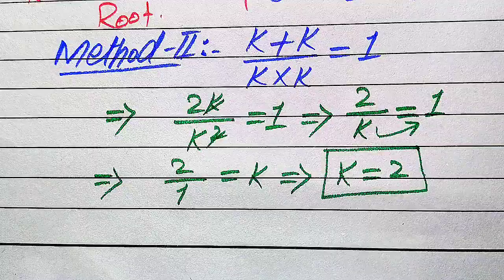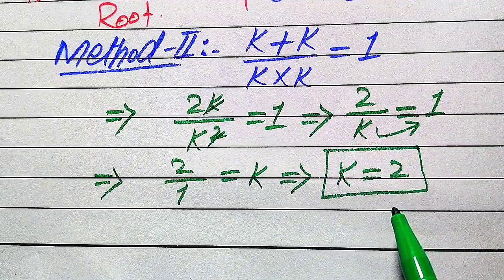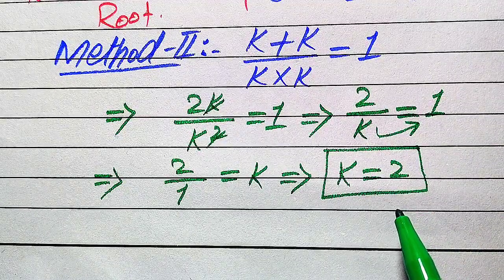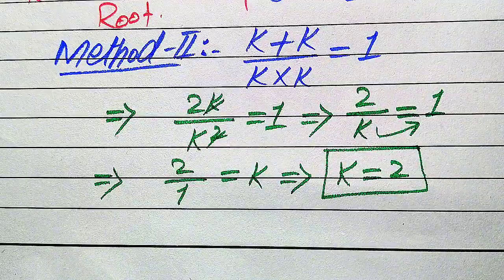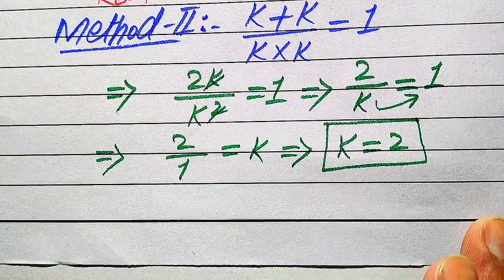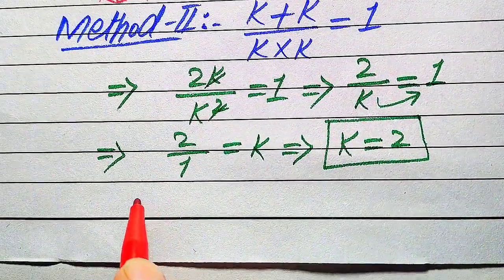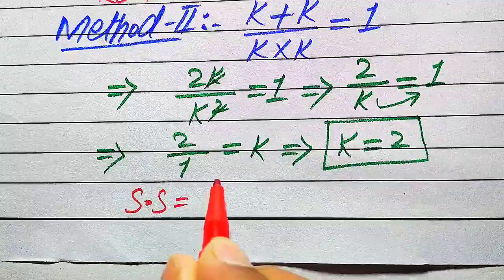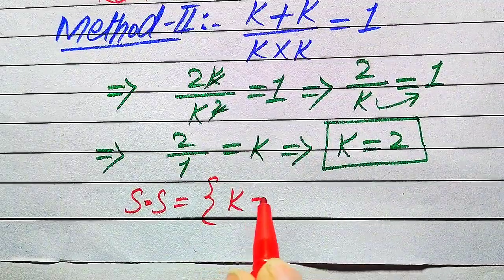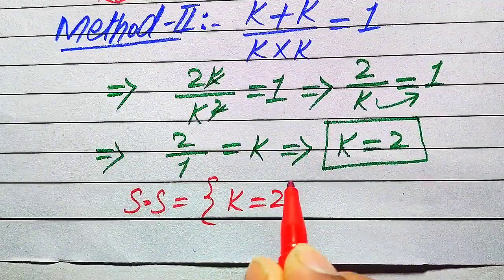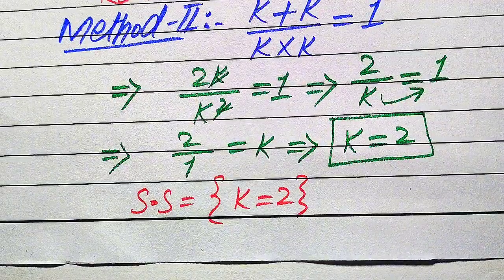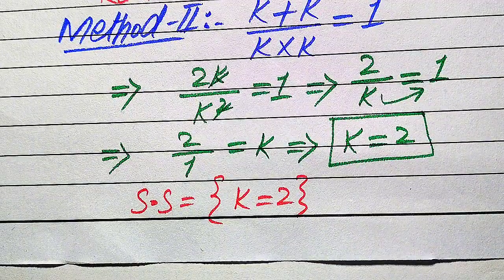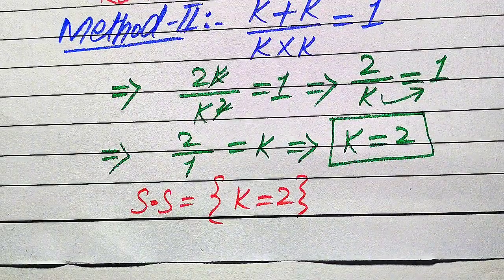Since 2 over 1 equals 2, we get k equals 2. In the second method we get only one root, which is k equals 2. In the first method we already verified that this value of k satisfies the given equation. So the solution set of this question is k equals 2 — the only solution of the given equation. This is the final answer. Thank you so much for watching this video. Please subscribe to my channel for more exciting videos.